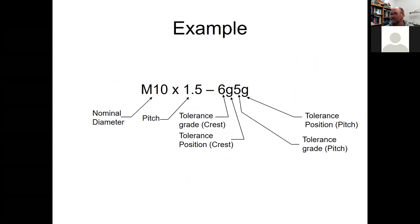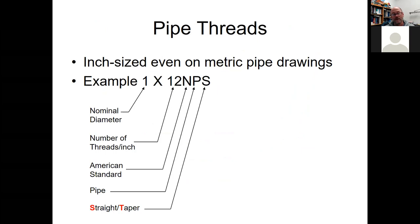Pipe threads are always in inches. For example: 1-inch nominal diameter, 12 threads per inch, National Pipe — designated as either T for tapered or S for straight. Tapered threads fit together faster and are commonly seen on pipes.